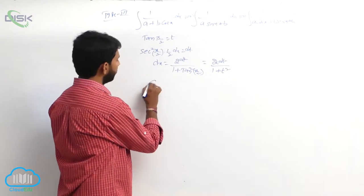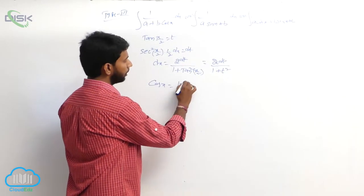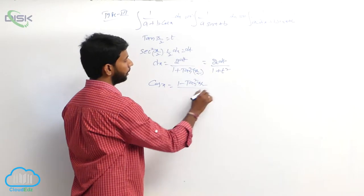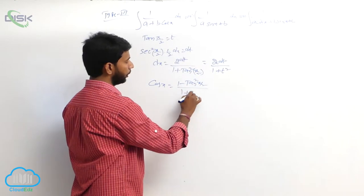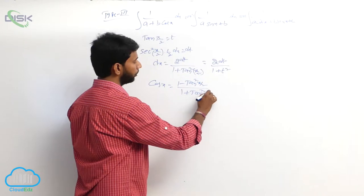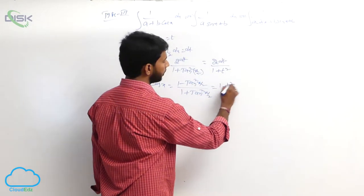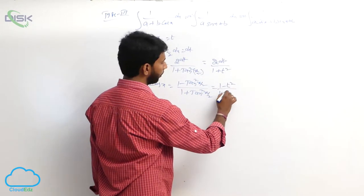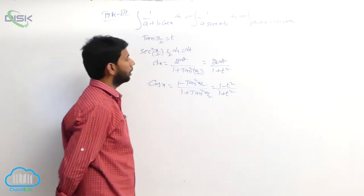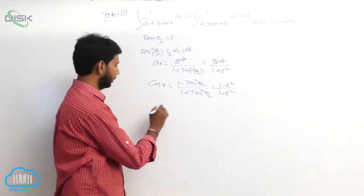And cos x is equal to: in terms of t, cos x equals (1 minus tan square(x/2)) by (1 plus tan square(x/2)), that is, (1 minus t square) by (1 plus t square). So the cos x value is (1 minus t square) by (1 plus t square).